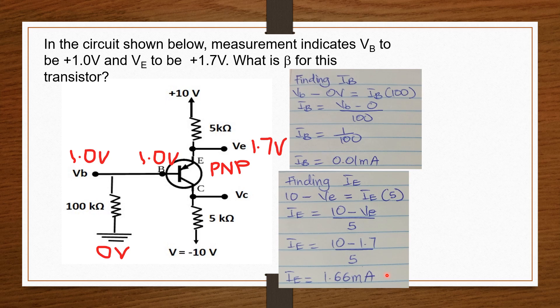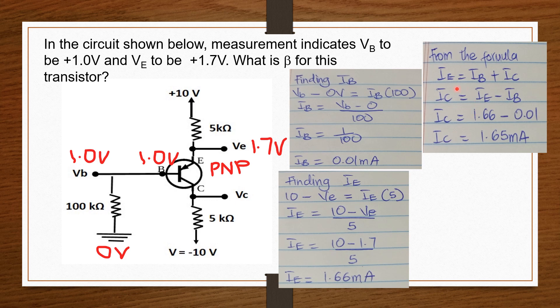Now that we know IB and IE, and using the formula IE equals IC plus IB, we can find IC. So IE equals IB plus IC. Making IC the subject and inputting our values for IE and IB, we get IC equals 1.65 milliamperes.